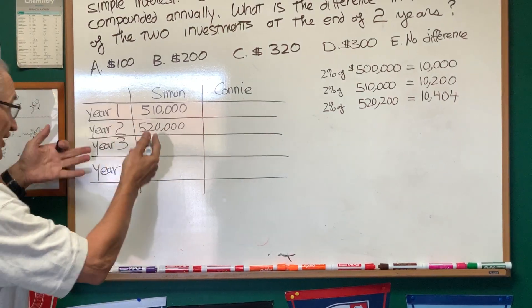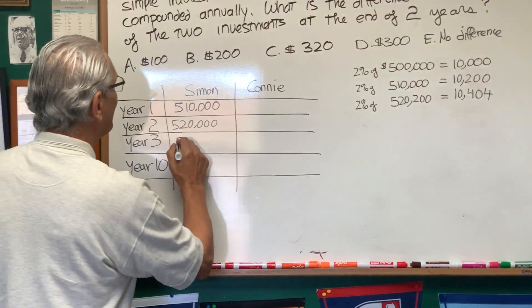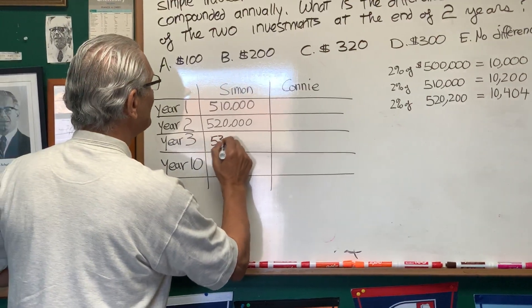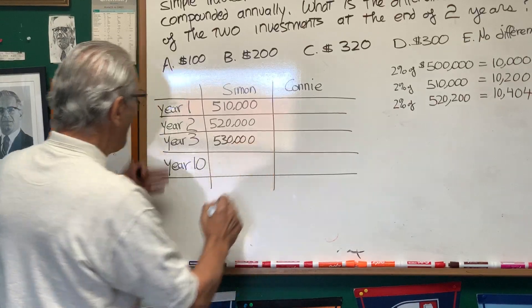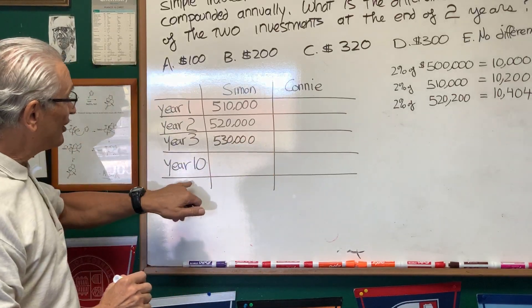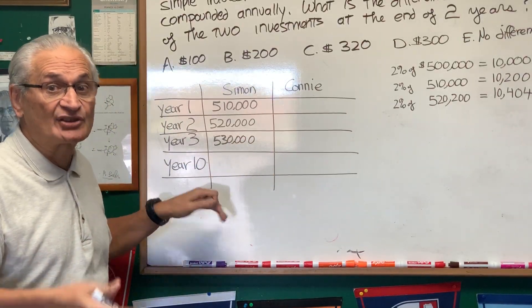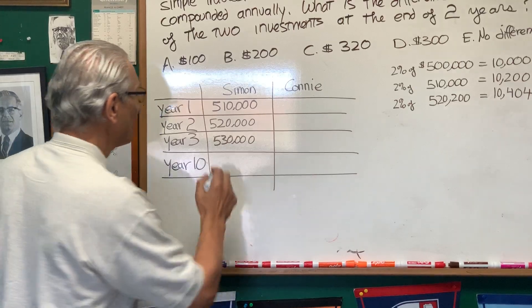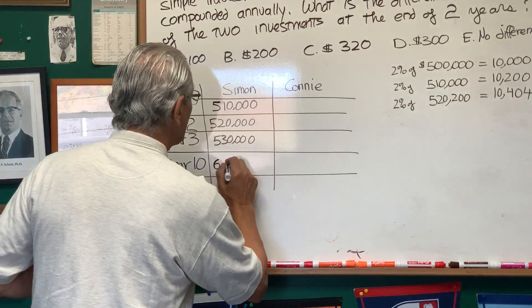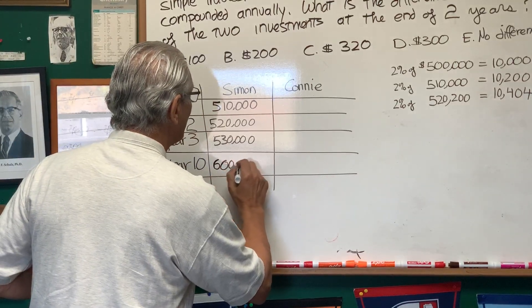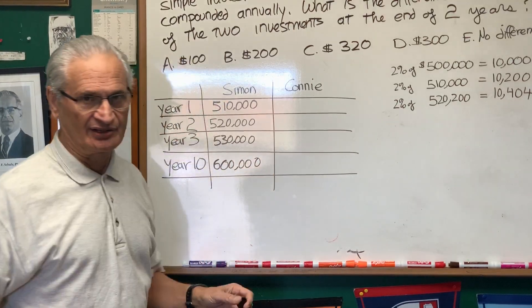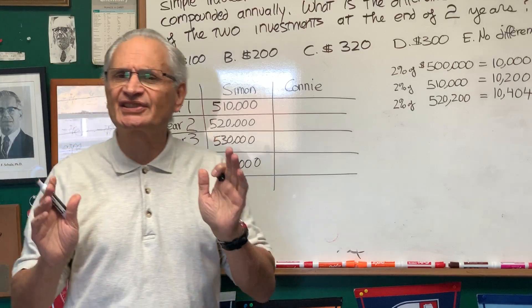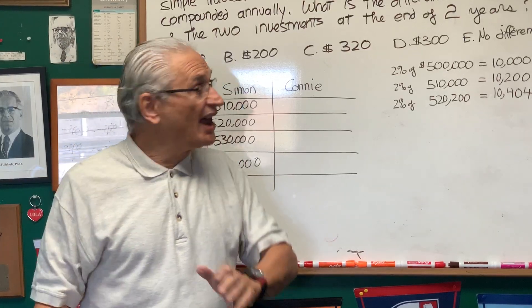If we're at the end of year three, $530,000. And if we go to year 10, we'll be adding $10,000 ten times and we'll reach a value of $600,000. That's simple interest.